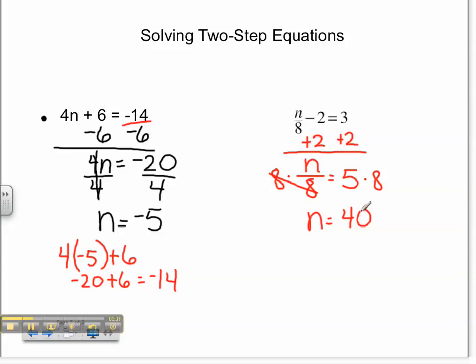Let's check our work on this problem. 40 over 8, or divided by 8, minus 2. 40 divided by 8 is 5. 5 minus 2 equals 3. Since that was the original solution we were looking for, our answer is correct.